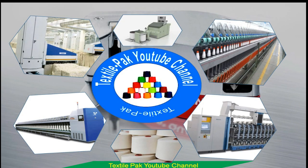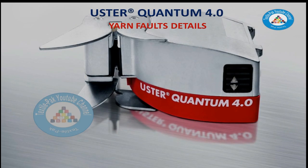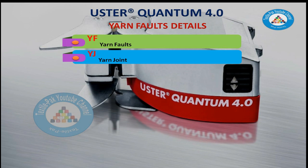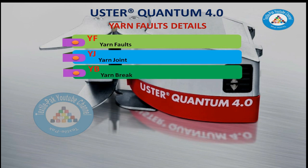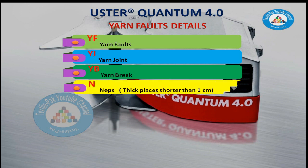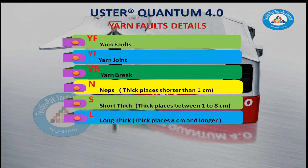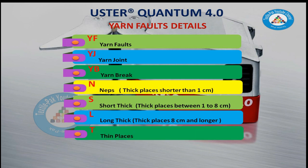Welcome to Textile Pack YouTube channel. Uster Quantum 4 Faults Details: YF – Yarn Faults, YJ – Yarn Joint, YB – Yarn Brick, N – Nebs, Thick Places Shorter Than 1cm, S – Short Thick, Thick Places Between 1–8cm, L – Long Thick, Thick Places 8cm and Longer, T – Thin Places Fault.